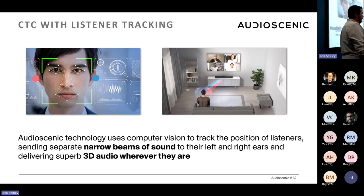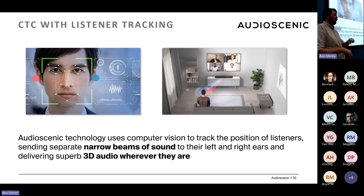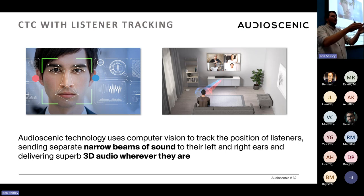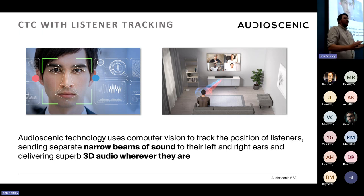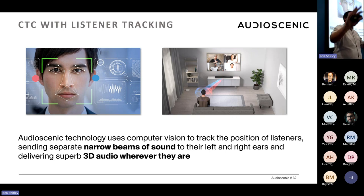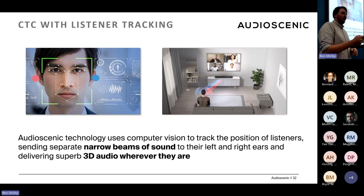This is where listener head tracking comes into play. We have a camera, an infrared sensor, or any form of listener tracking in the soundbar. We know where the listener is at any given moment, and for every signal processing block we update the filters to account for that new listener position. No matter where the listener moves, we're always effectively steering and directing those beams to the new listener location — the listener is always in the sweet spot. The sweet spot has been a classic issue in spatial audio over speakers ever since stereo was invented. Using this technology, we can ensure the listener is always in the sweet spot.